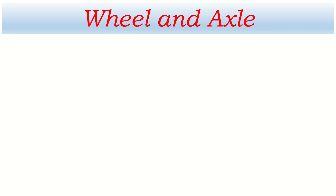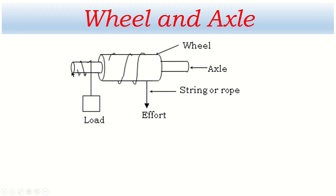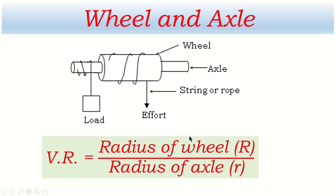This is the diagram for wheel and axle. The big cylinder is the wheel and the small cylinder inserted into it is the axle; they rotate around a common fixed axis. Normally a rope is wound around the wheel and another rope is wound around the axle in the opposite direction, so that when we pull the rope of the wheel, the wheel turns, the axle turns with it, and the load rises up. The velocity ratio of wheel and axle is the ratio of the radius of the wheel to the radius of the axle.